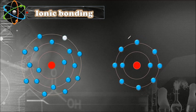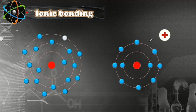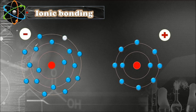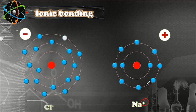This electron from sodium is going to jump to the chlorine atom. This atom lost one electron and became positive, and this atom gained one electron and became a negative ion. When we write sodium we write Na⁺ because it is now a positive ion, and for chlorine we write Cl⁻ because it is now a negative ion.